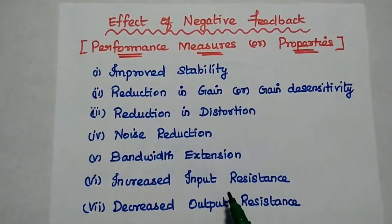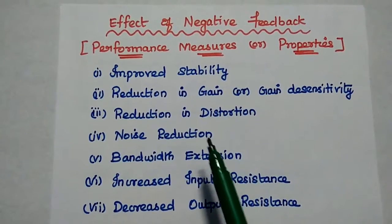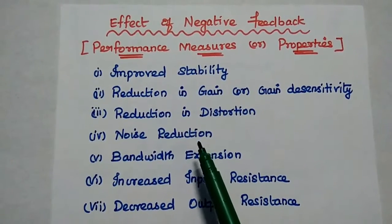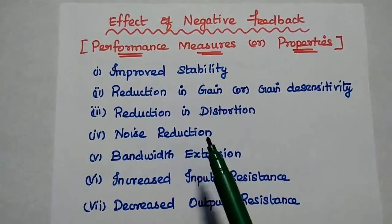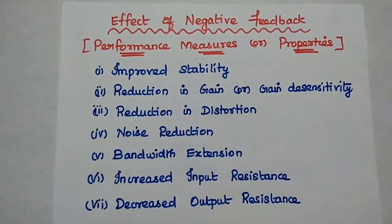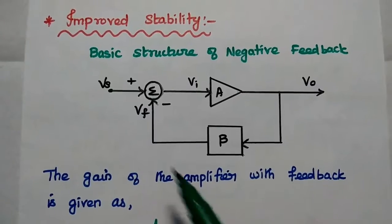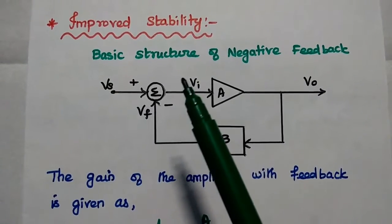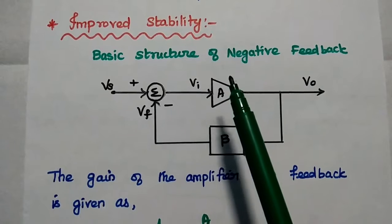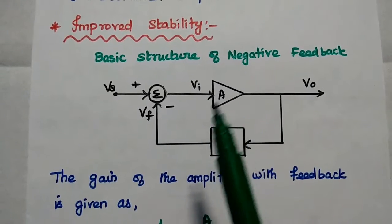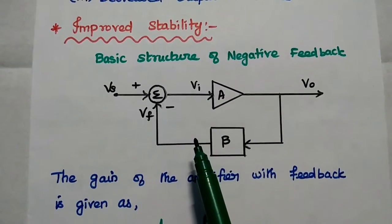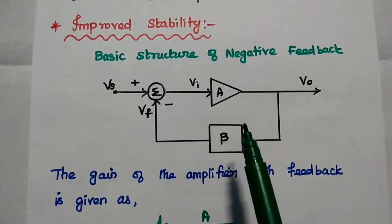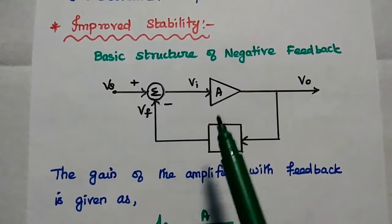In this lecture video, we are going to cover the first four properties with their proof. Let's start with improved stability. This is the basic structure of a negative feedback amplifier.